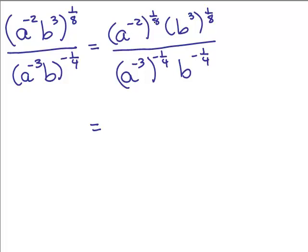So I have to do negative 2 times 1 eighth. That's going to give you a negative 2 eighths. You could leave it like that, or you could reduce it to negative 1 fourth. For right now, I'm just going to leave it as negative 2 eighths, and I'm going to have a b 3 times 1 eighth, that'll be 3 eighths.